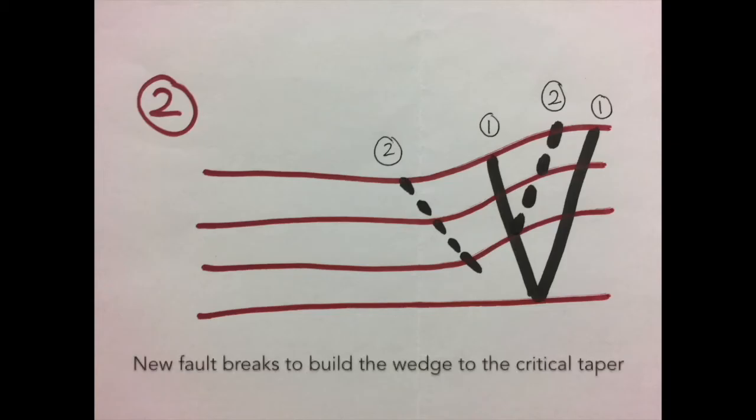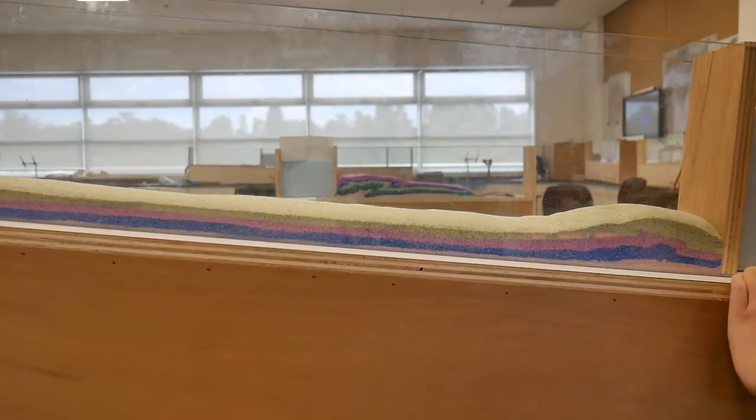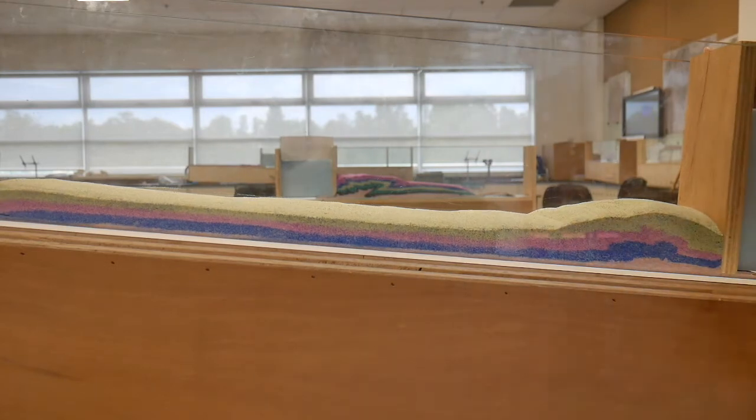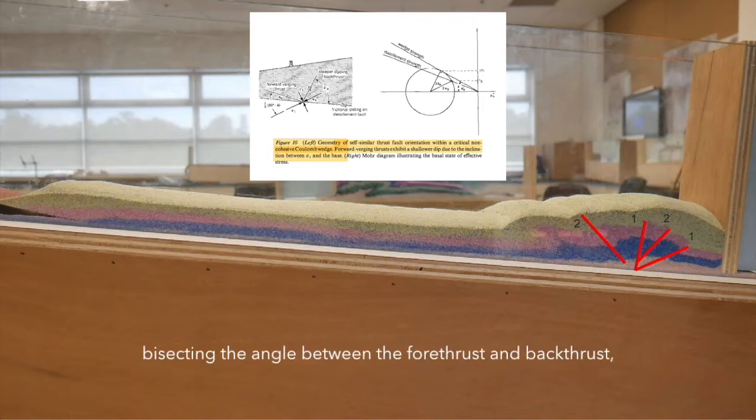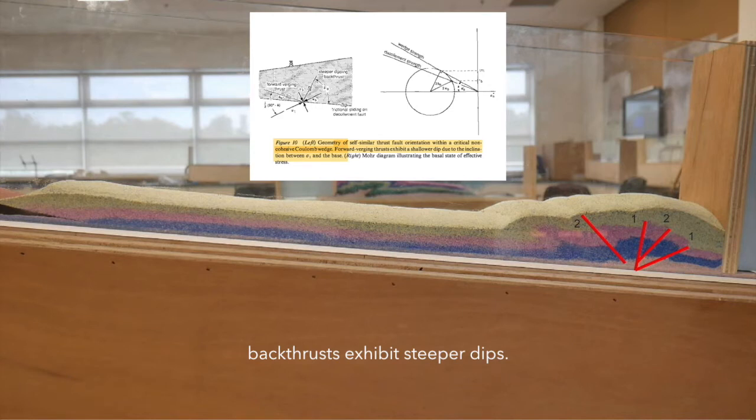New fault breaks to build the wedge to the critical taper. Because the detachment is tilted and sigma 3 is vertical, bisecting the angle between the forethrust and backthrust, backthrusts exhibit steeper dips.